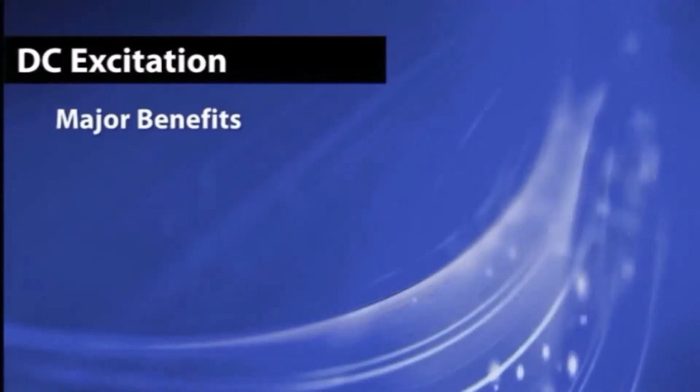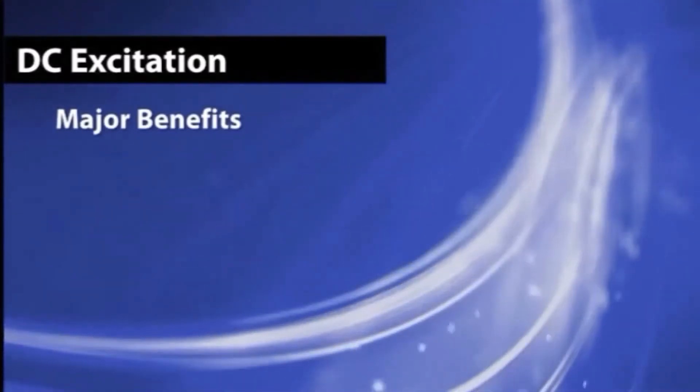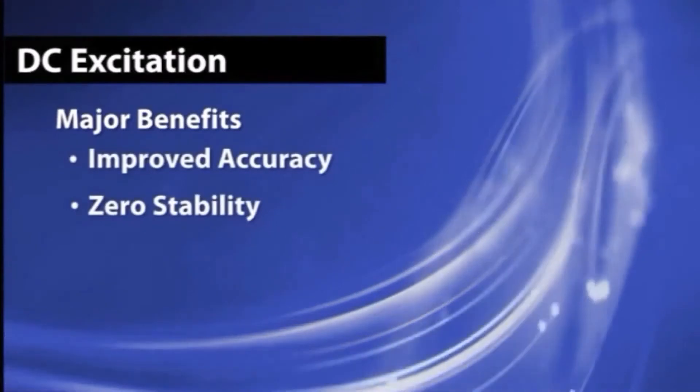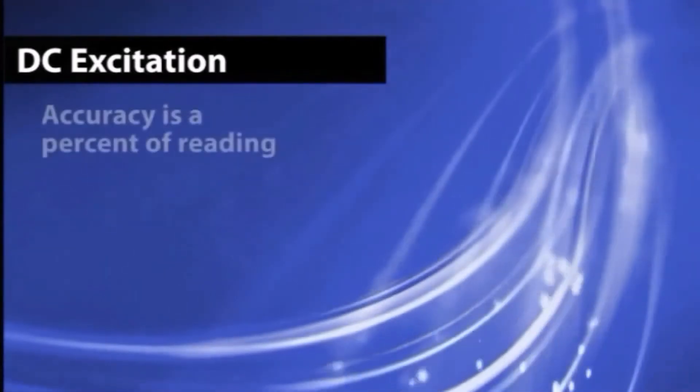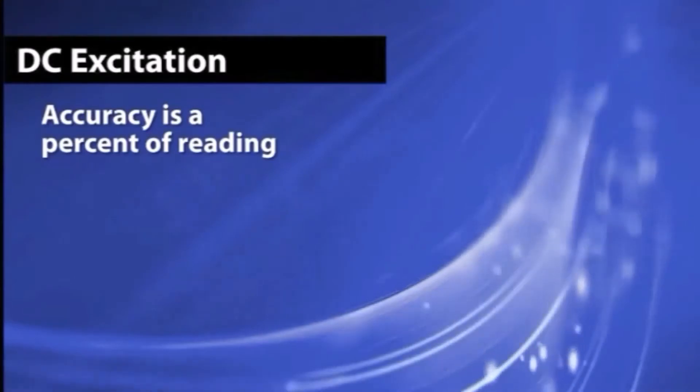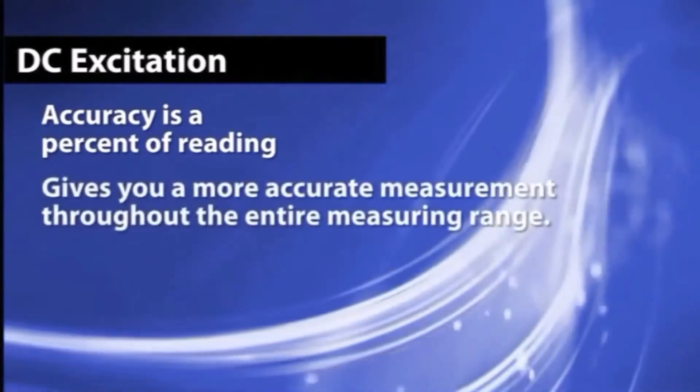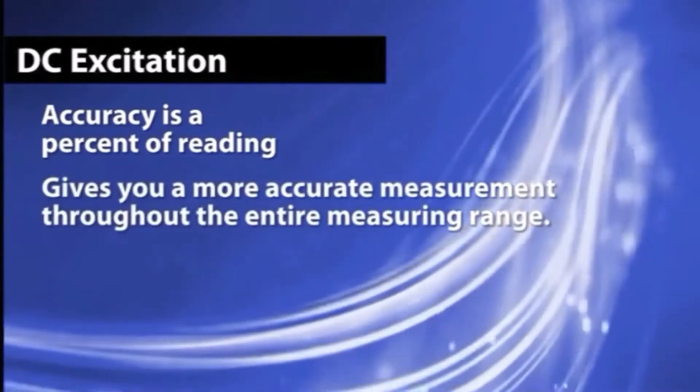The major benefits of pulsed DC excitation over AC excitation is the improved accuracy and zero stability. The accuracy of a DC type meter is a percent of reading. This gives you a more accurate measurement throughout the entire measuring range.